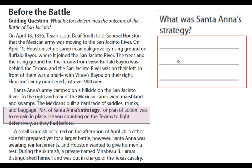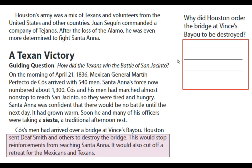Part of Santa Ana's strategy, or plan of action, was to remain in place. He was counting on the Texans to fight defensively as they had before. A small skirmish occurred on the afternoon of April 20th. Neither side felt prepared yet for a larger battle. Santa Ana was awaiting reinforcements and Houston wanted to give his men a rest. During the skirmish, a private named Mirabeau B. Lamar distinguished himself and was put in charge of the Texas cavalry. Houston's army was a mix of Texans and volunteers from the United States and other countries. Juan Seguin commanded a company of Tejanos. After the loss of the Alamo, he was even more determined to fight Santa Ana.